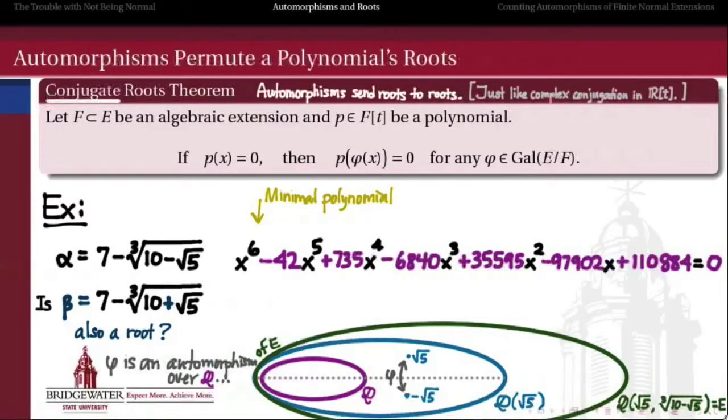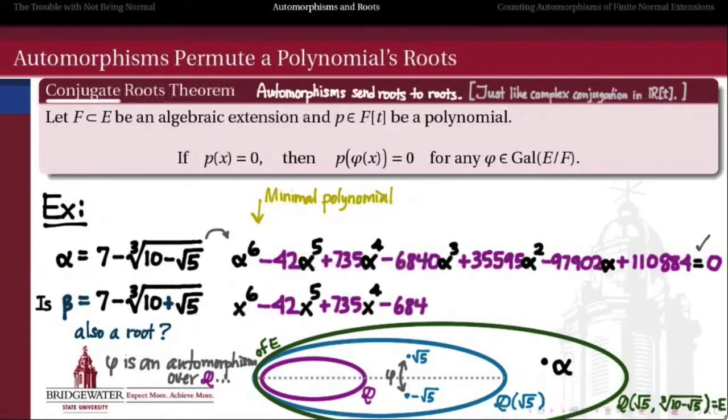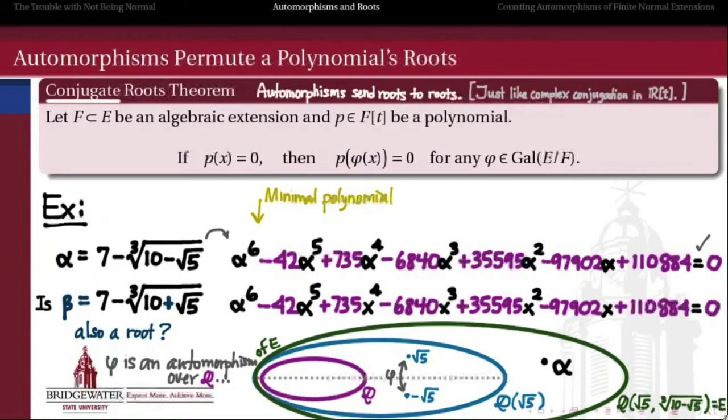Now, why is the conjugate roots theorem true? Why is it true that if alpha satisfies this polynomial equation, that phi of alpha must also satisfy this polynomial equation if phi is an automorphism over Q? Well, all we have to do is take this polynomial equation which we've written down here and just apply the automorphism phi to both sides of this equation.